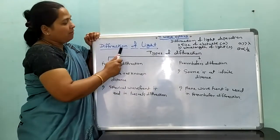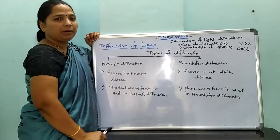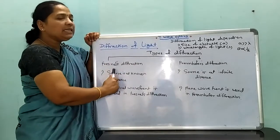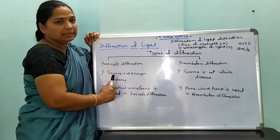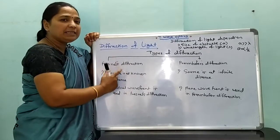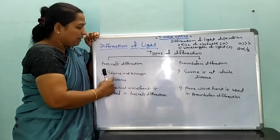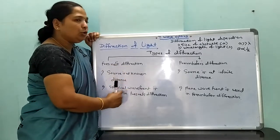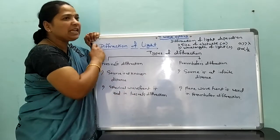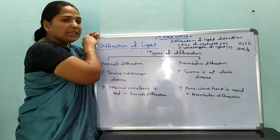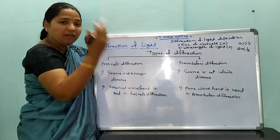There are two types of diffraction: Fresnel diffraction and Fraunhofer diffraction. In Fresnel diffraction, the source is at a finite distance from the slit or screen, and a spherical wavefront is used.